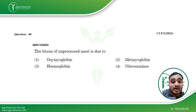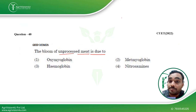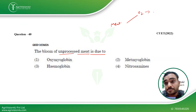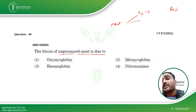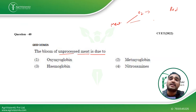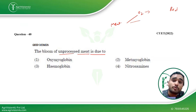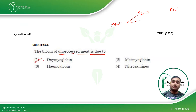The bloom of unprocessed meat is due to — when we discussed animal products and meat, I told you that when meat has enough O2, the myoglobin converts into oxymyoglobin, which is pinkish red in color. With limited O2 it forms a purplish color, and with no O2 it forms a bluish color, which is not advisable and not considered good by customers, which is why you have to package your product properly. So the bloom of unprocessed meat is due to oxymyoglobin.